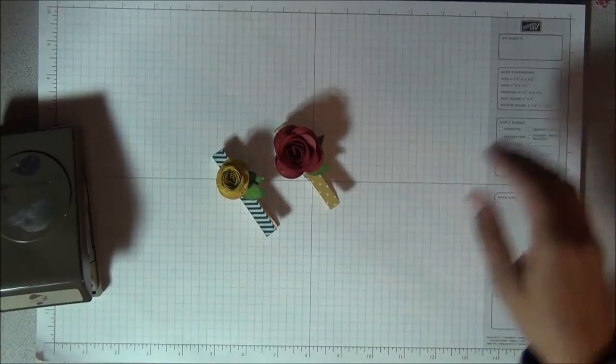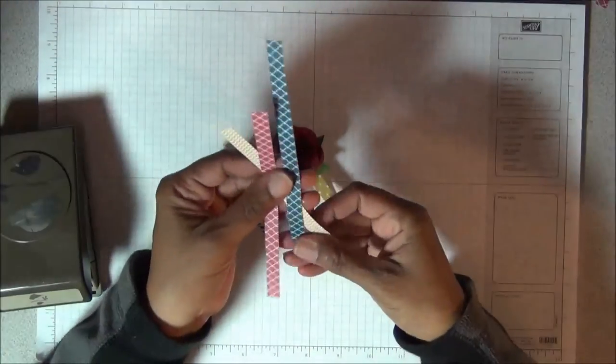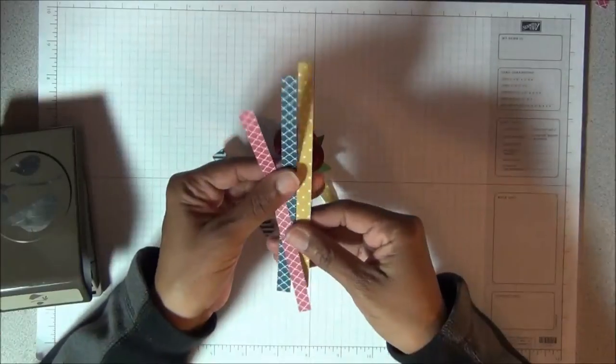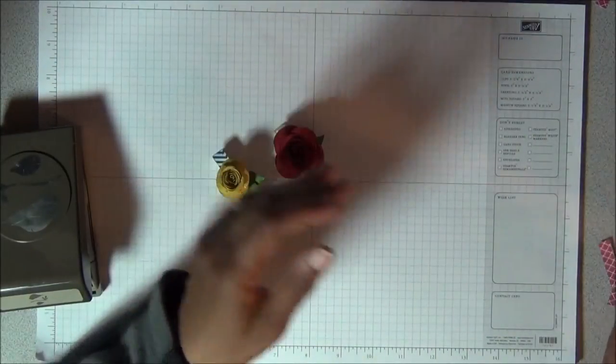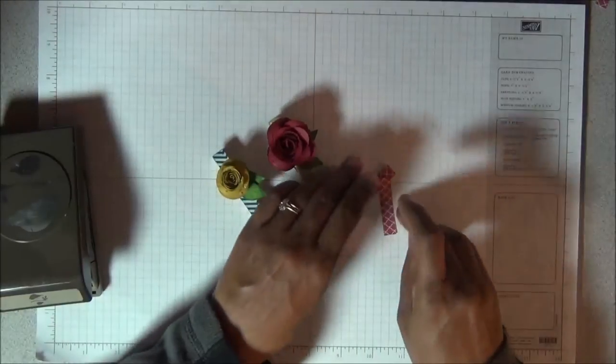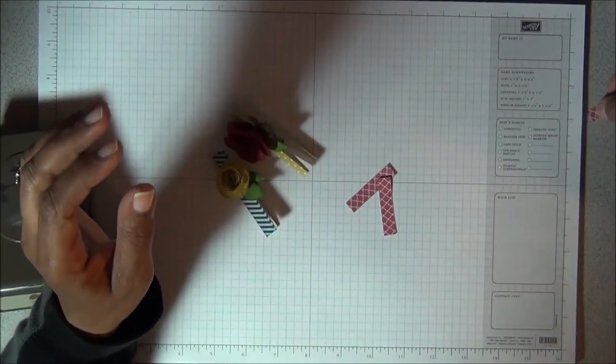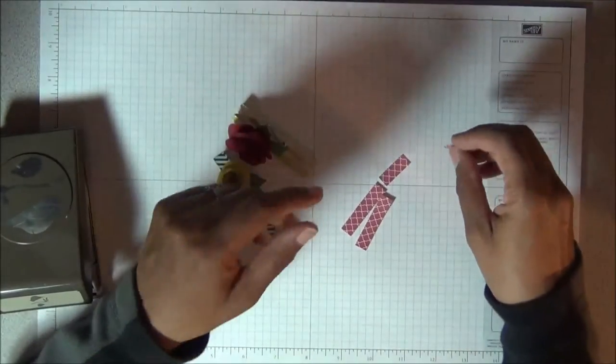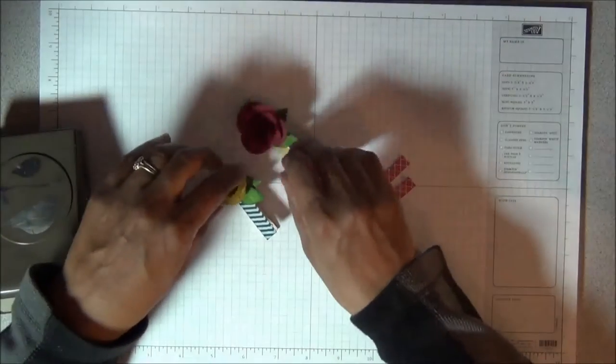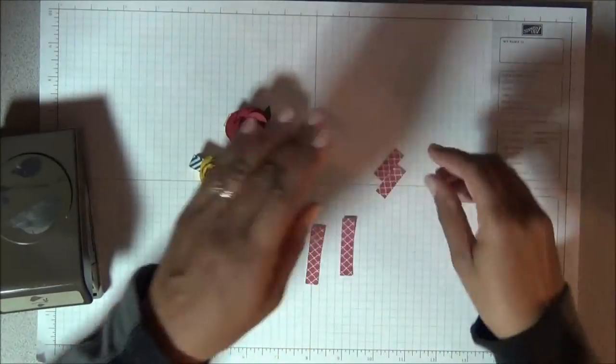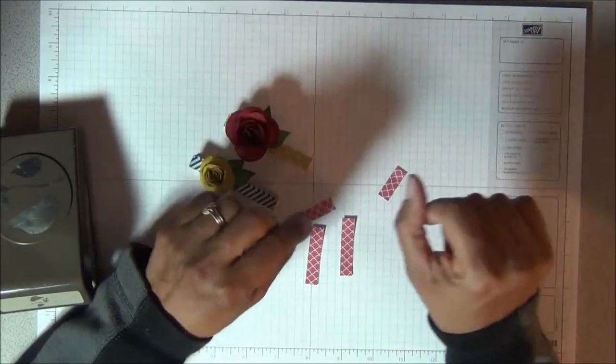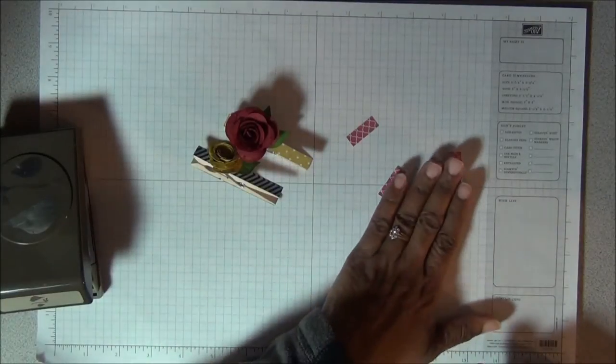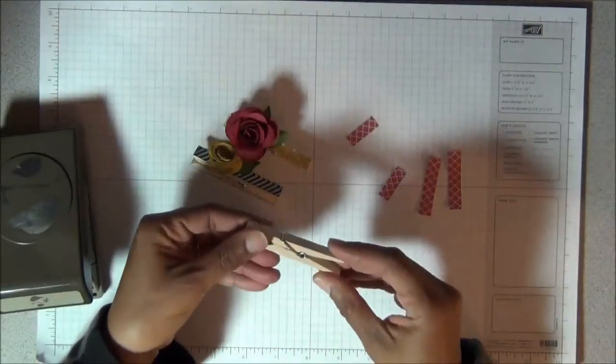For this project you will need strips of paper like these here, cut at 3/8 inch. These clothespins are very inexpensive. I got a pack of I think 50 or 100 for just a few dollars. You will need two strips of each: this little strip here is 3/8 by 1 inch, and then this is 3/8 by 1 and 3/4 inches.